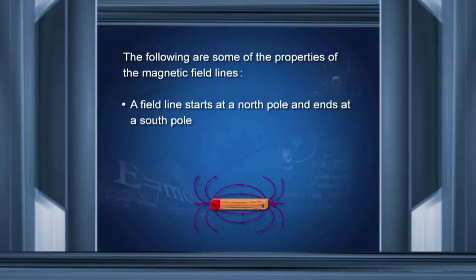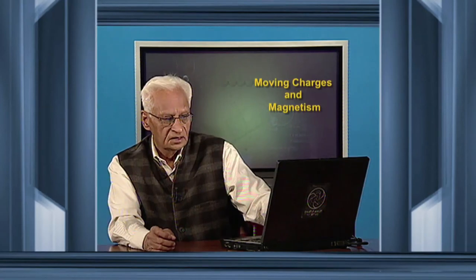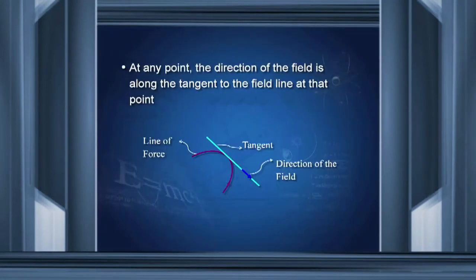The following are some properties of magnetic field lines. A field line starts at a north pole and ends at a south pole. Inside the magnet, these lines go from south to north, so that they form complete loops. At any point on a field line, the direction of the magnetic field is given by the tangent drawn at that point.